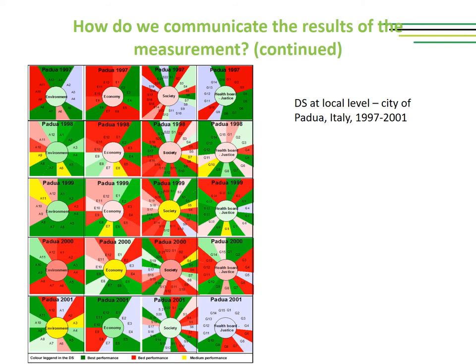On this slide we are looking at how the dashboard of sustainability works at the local level, using the city of Padua, Italy between 1997 and 2001. We can clearly see how various areas of sustainability have evolved over time.